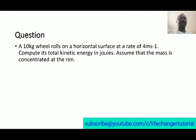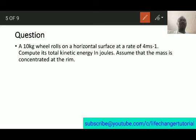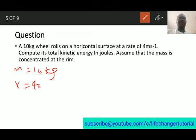The next question says: a 10-kilogram wheel rolls on a horizontal surface at a rate of 4 meters per second. Compute its total kinetic energy in joules, assuming the mass is concentrated at the rim. The mass is 10 kilograms and the linear velocity is 4 meters per second.